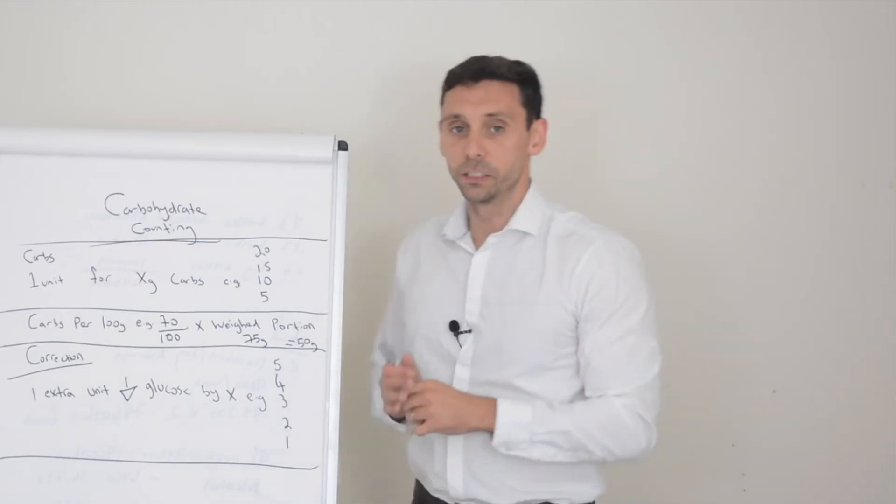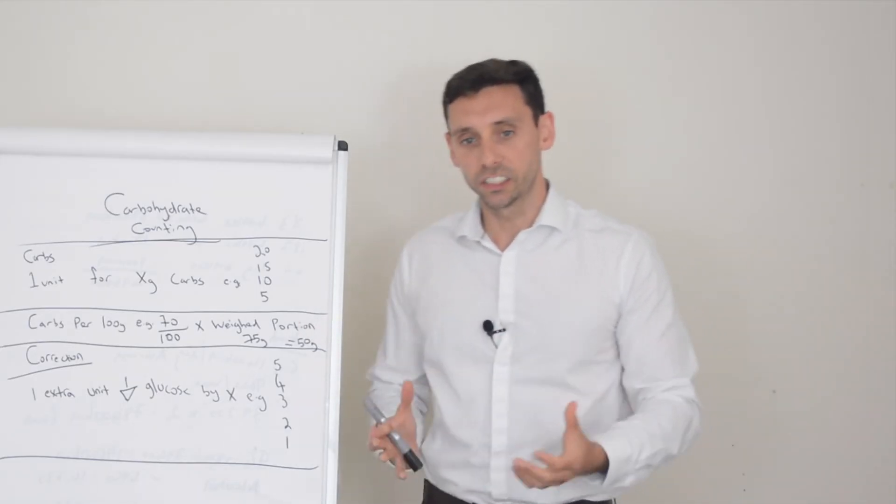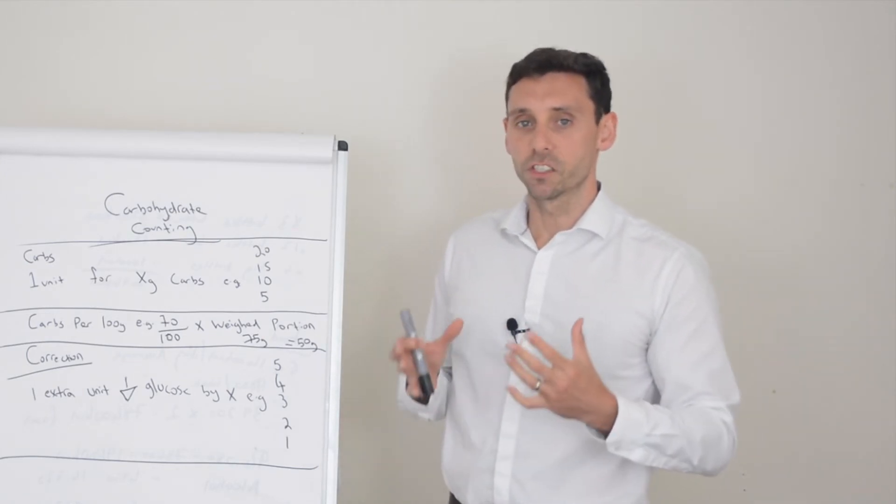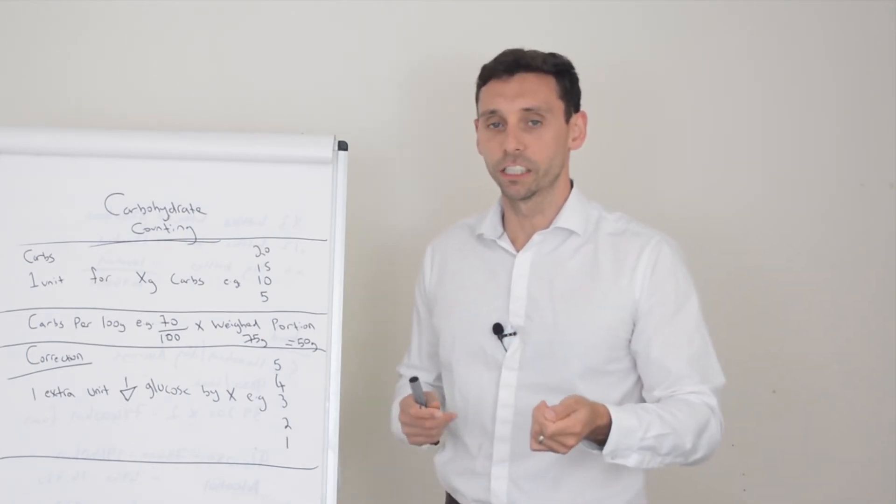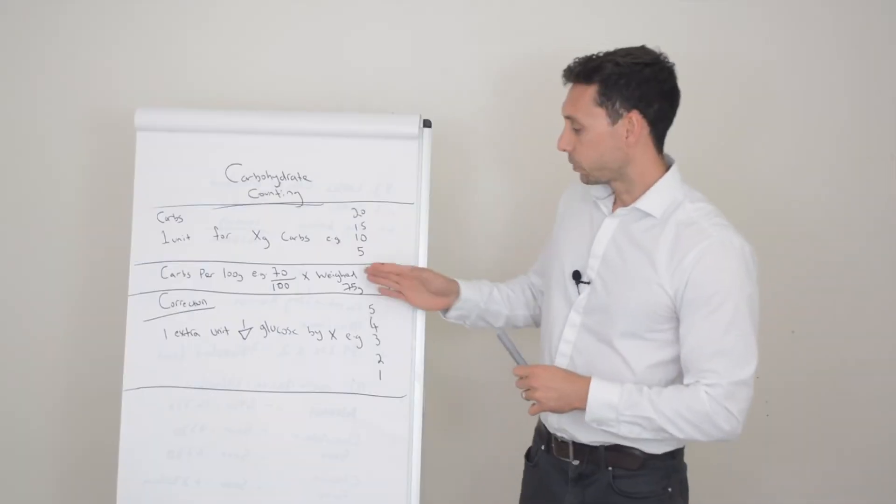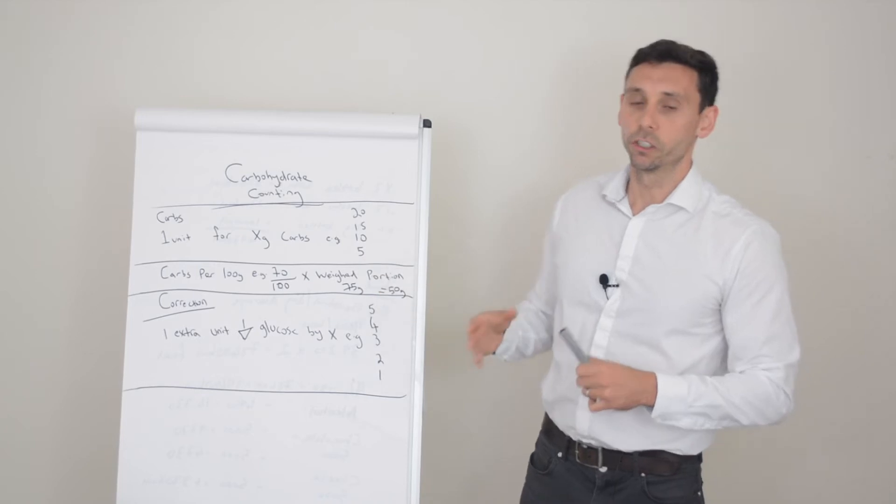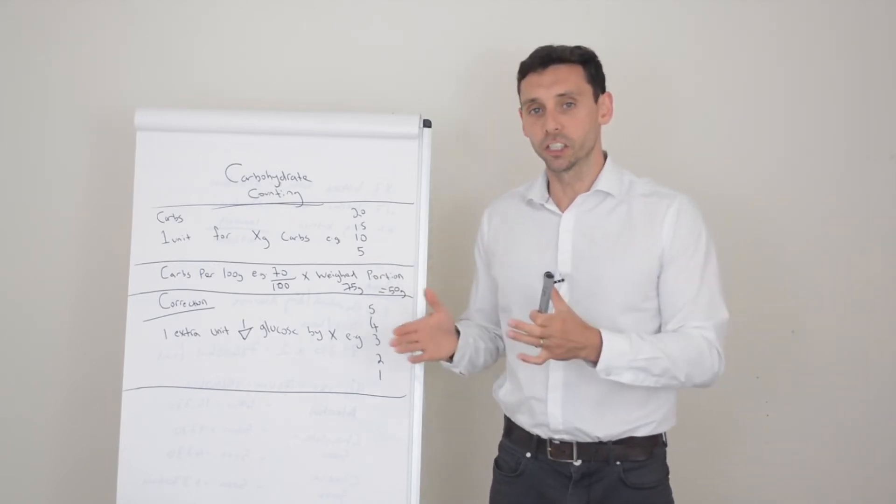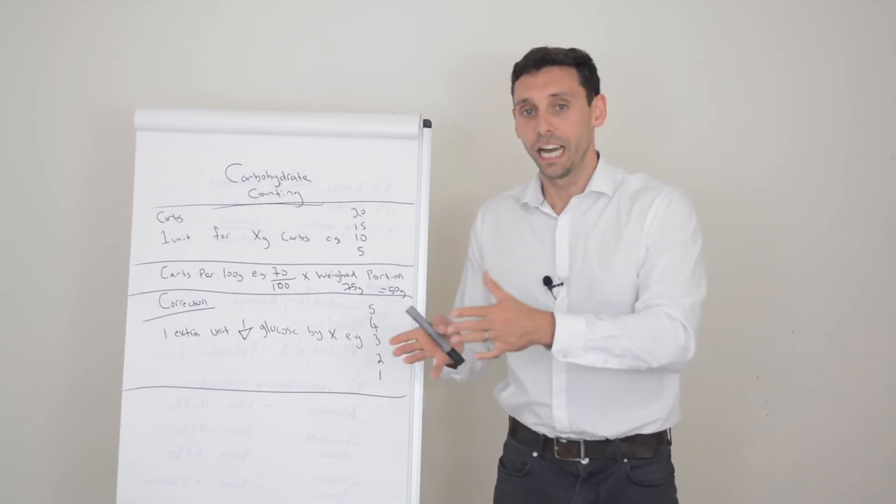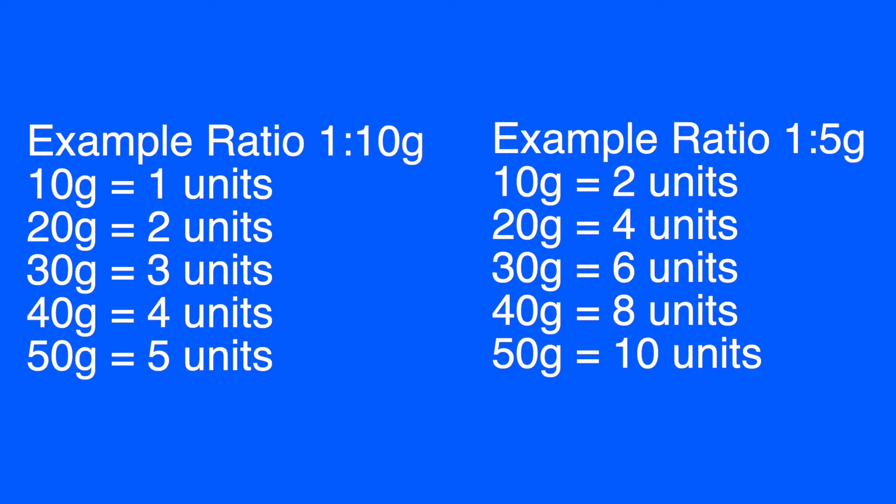Now the good thing about this is we tend to be creatures of habit so things like cereal porridge are going to be very similar portions each day. So once you've done it once or if you're using a measuring cup you know that's your portion and then you know that's your insulin dose. Sometimes it'll even give it to you on the label so like bread for example says per slice so if you have two slices of bread you can just look at per slice add them together and that gives you your carbohydrates. Then you plug that into your ratio one unit for x grams one unit for 10 for example and then you give that dose of insulin.